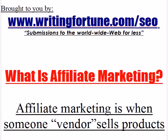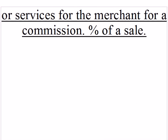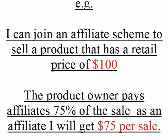We start with explaining what affiliate marketing is. Affiliate marketing is when someone — in this case a vendor — sells products for a merchant, in most instances for a commission of a sale. For example, say I join an affiliate scheme to sell a product that retails at $100. The merchant offers to give affiliates 75% of the sale.